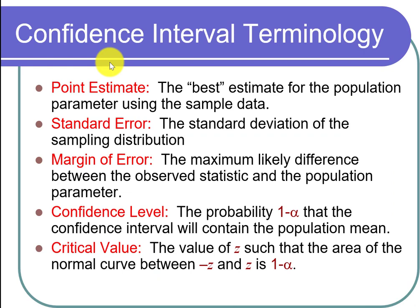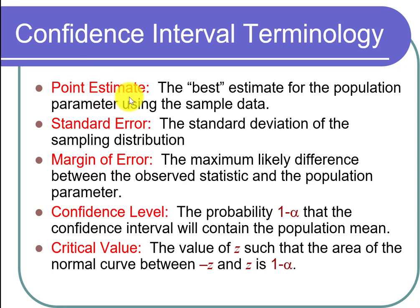Let's start out by talking about some terminology — some of this you've seen before, some will be new. The point estimate is the best estimate for the population parameter using the sample data. So if you conduct a yes-no question study and want an estimate for the population proportion, your best estimate will be the sample proportion. Another key piece of vocabulary from the prior chapter is standard error — the standard deviation of the sampling distribution — which gives an idea of how close your point estimate is likely to be from the population parameter.